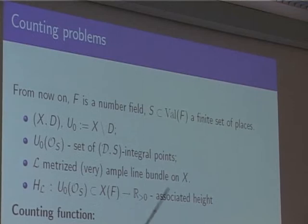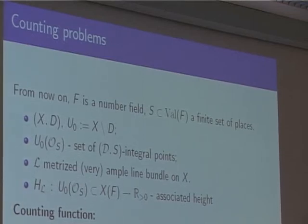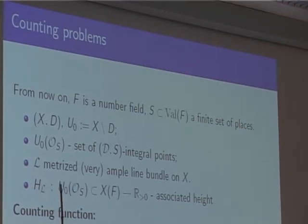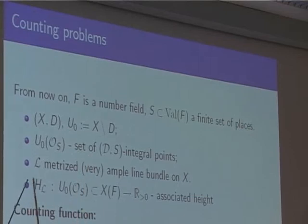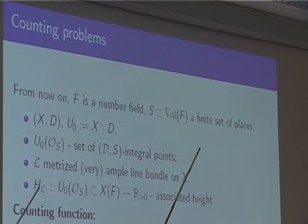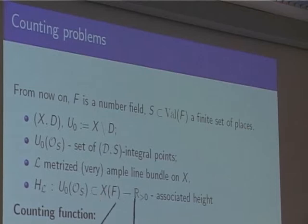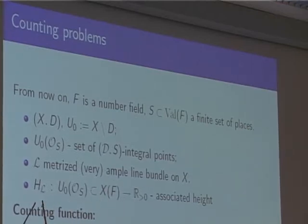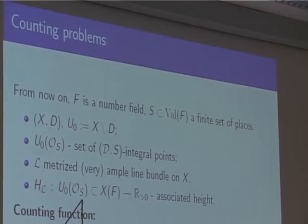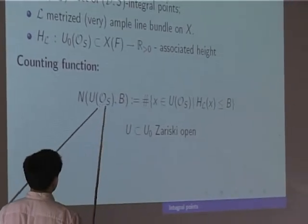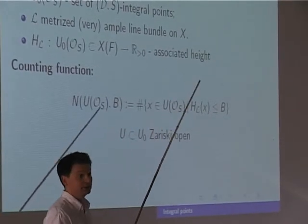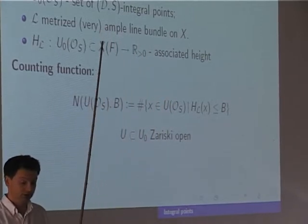We already know what to do for rational points: fix a projective embedding, use a notion of height, and since integral points are a subset of rational points, we do the same. We fix a metrized line bundle, choose norms, and get the associated height on rational points, which we restrict to integral points. We can also look at a Zariski open subset of the complement of D.